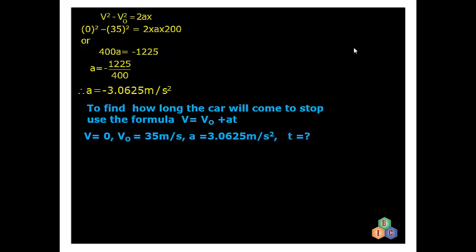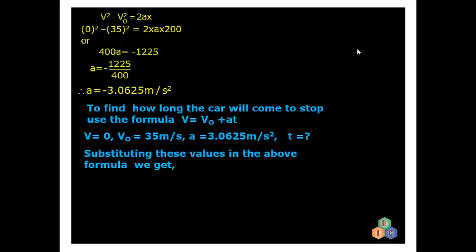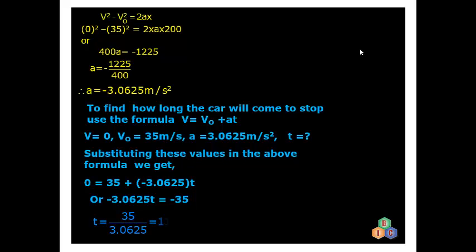To find how long the car takes to stop after the brakes are applied, use the first equation of motion: V = V₀ + at. Here V = 0 (final velocity), V₀ = 35 m/s (initial velocity), and a = −3.0625 m/s² (retardation). Substituting: 0 = 35 + (−3.0625)T, so −3.0625T = −35. The negatives cancel, giving T = 35 ÷ 3.0625 = 11.42 seconds.